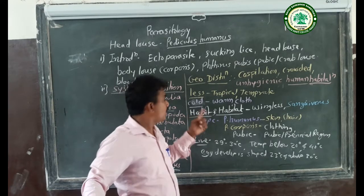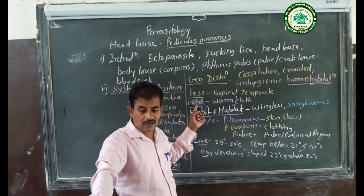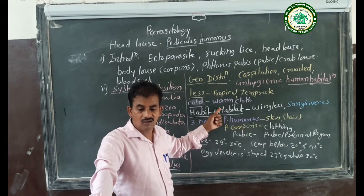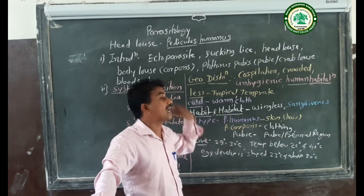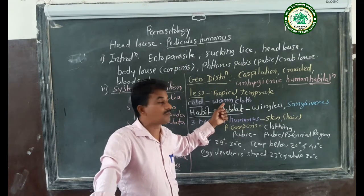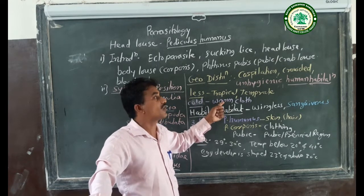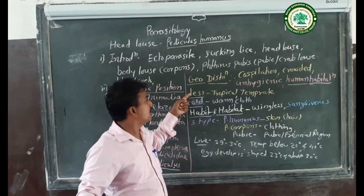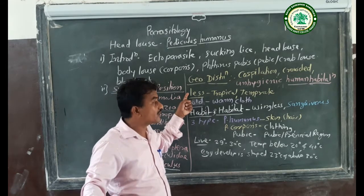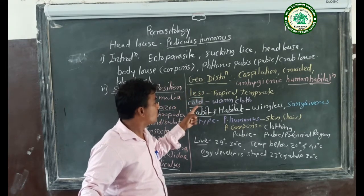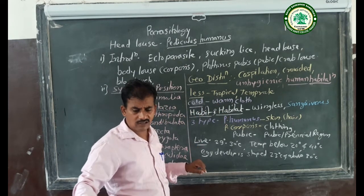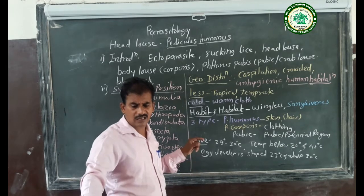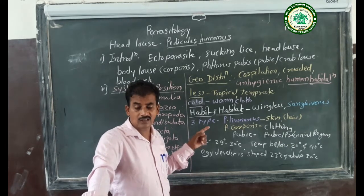In colder regions, people use large amounts of warm clothing and change it infrequently. Therefore, in the temperate region, the population of the head louse is less, while in the colder region, the population of the head louse is larger. Actually, the head louse is commonly found in warmer areas where bathing is treated more frequently.